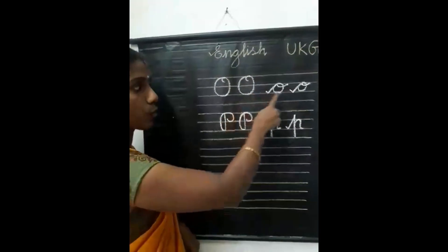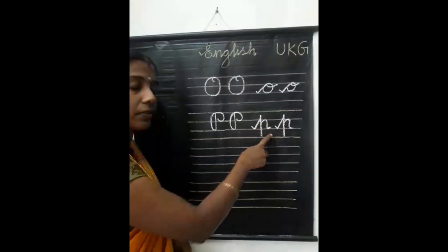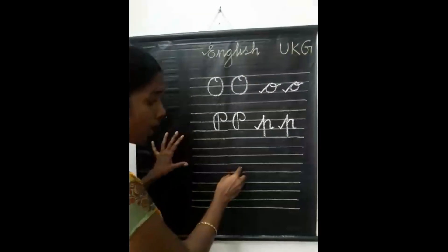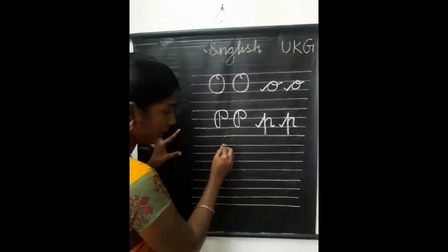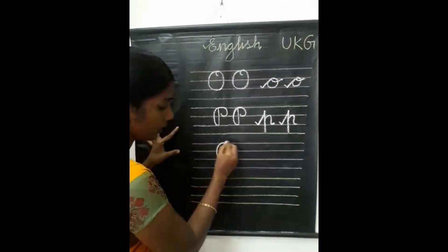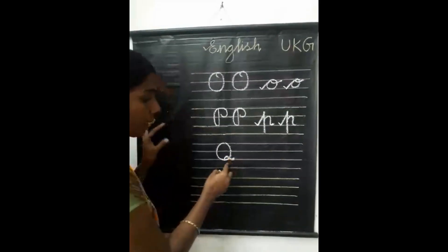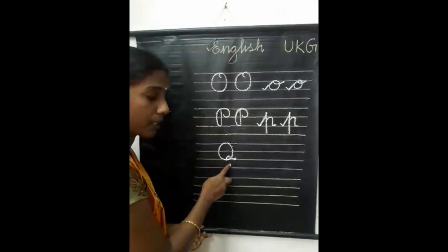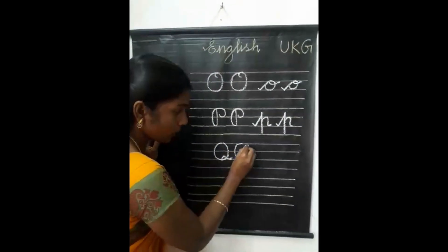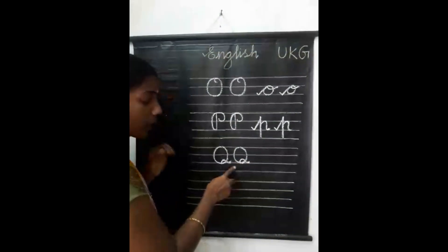Capital letter O, small letter O, capital letter P, small letter P. What letter will come after P? Q. Let's see how to write capital letter Q. You write one circle, then from here you write one hook. Capital letter Q.